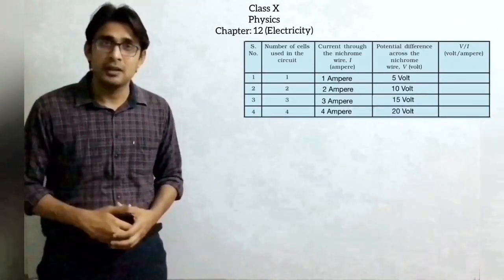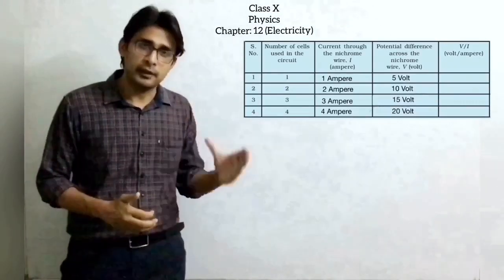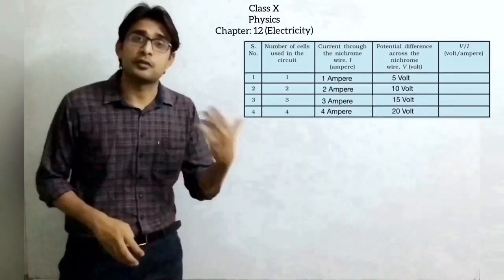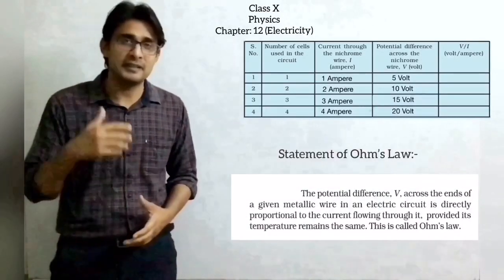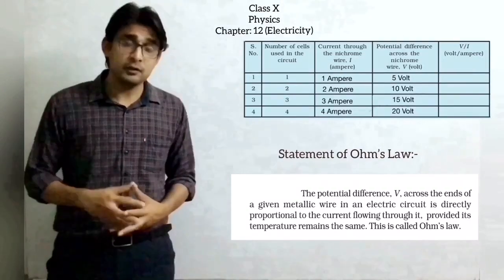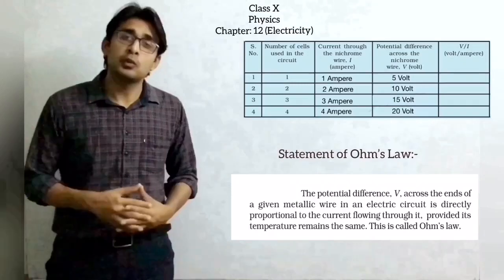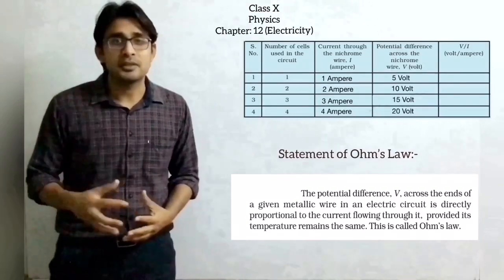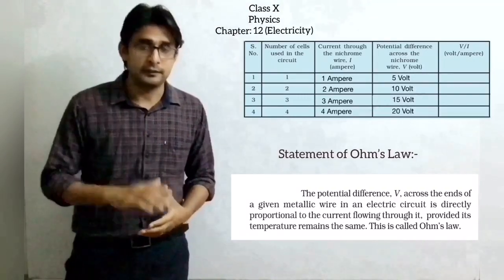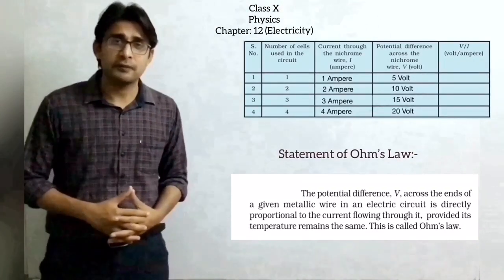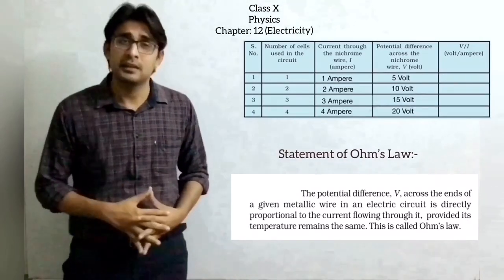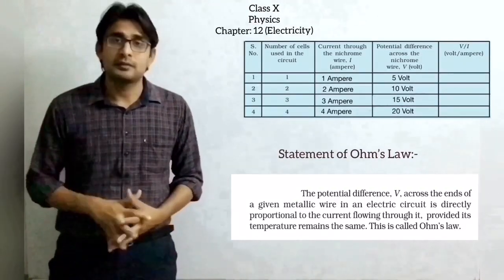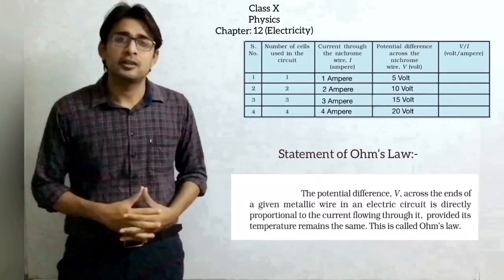This means that potential difference is directly proportional to current — when we increase potential difference, the current through the circuit also increases. This is Ohm's law. According to Ohm's law, the potential difference across the two ends of a conductor or wire is directly proportional to the current flowing through it, provided the temperature remains constant.